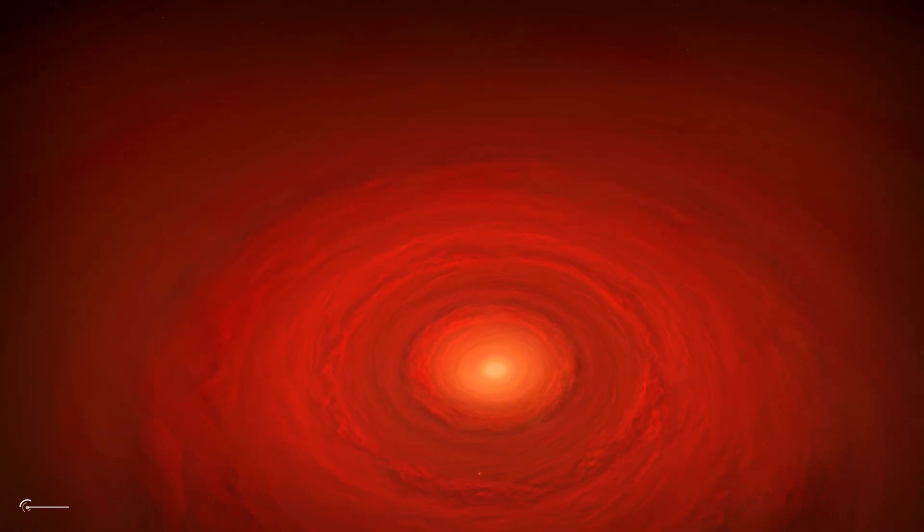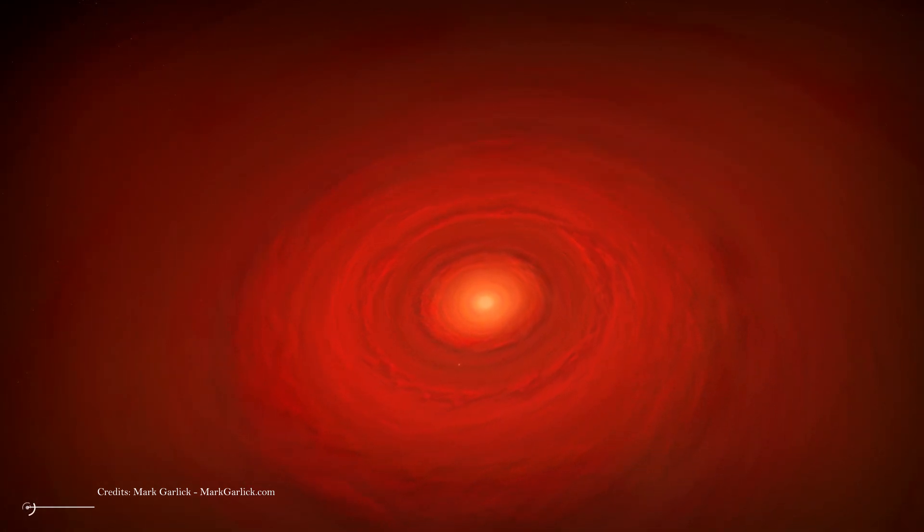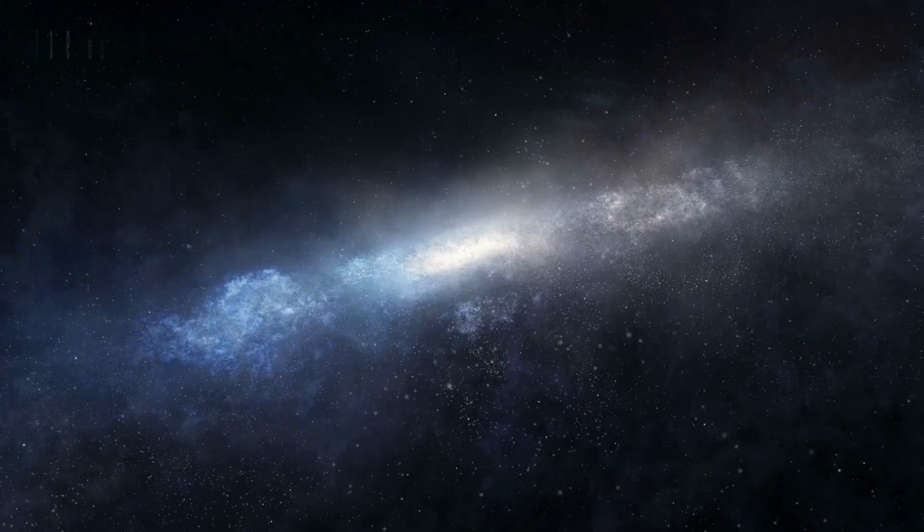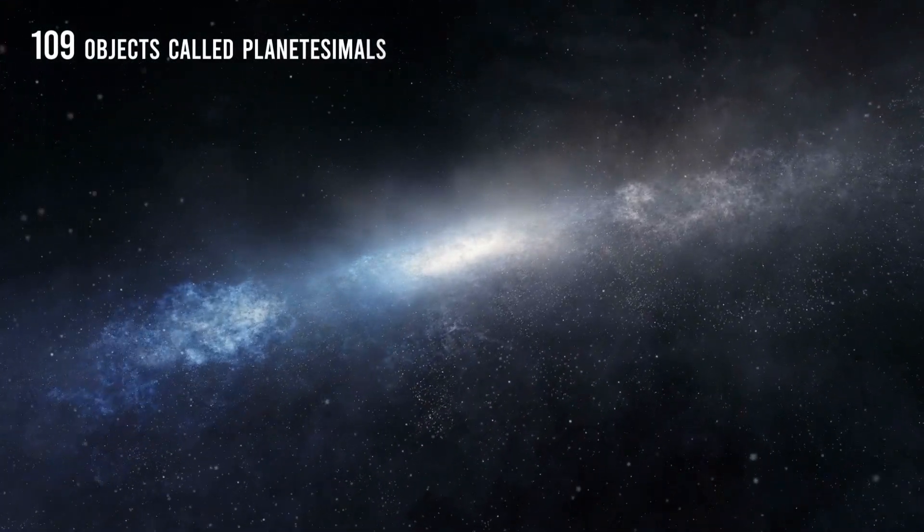Dust particles in the spinning disk began to clump together as gravity attracted them to each other. You have to think about it as a fight. During this period, clumps of matter were trying to grow as big as they could in order to overcome the others in size, thus being the dominating objects in the disk.